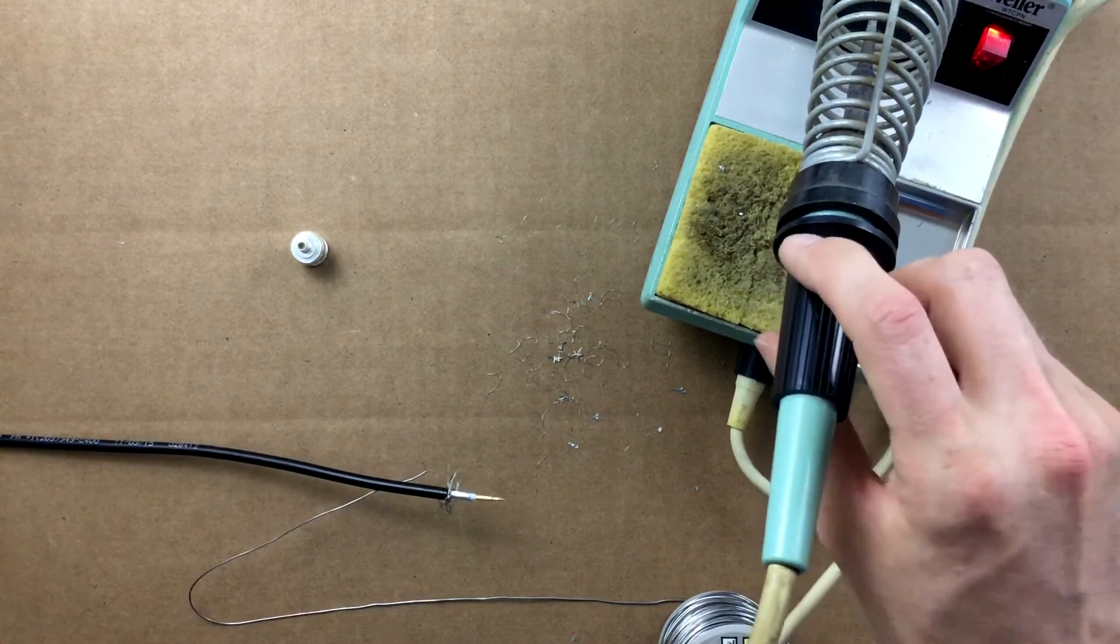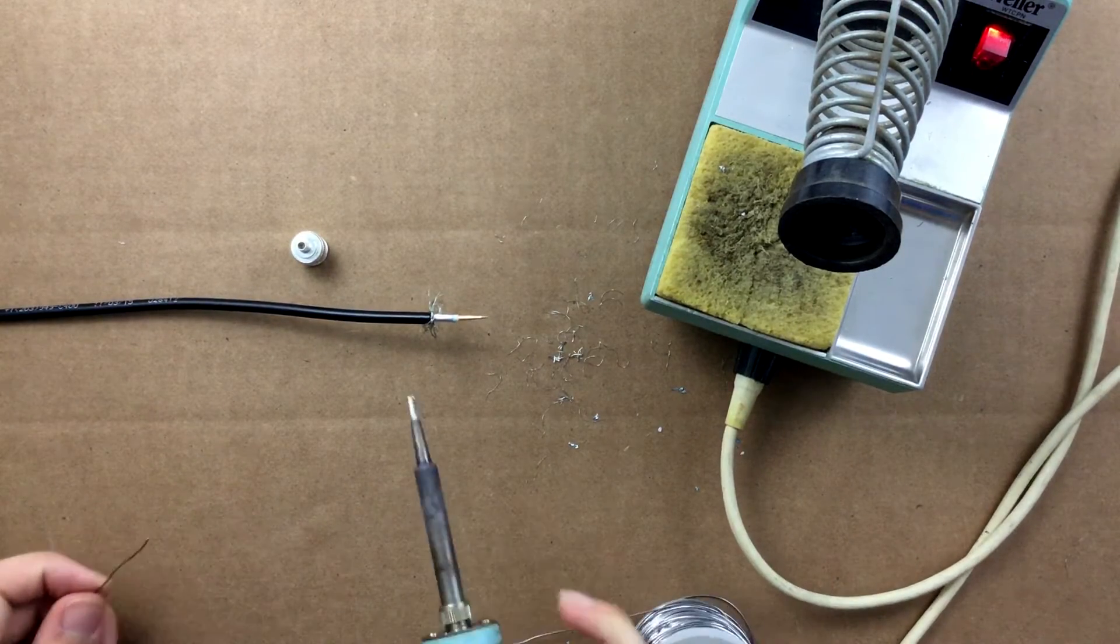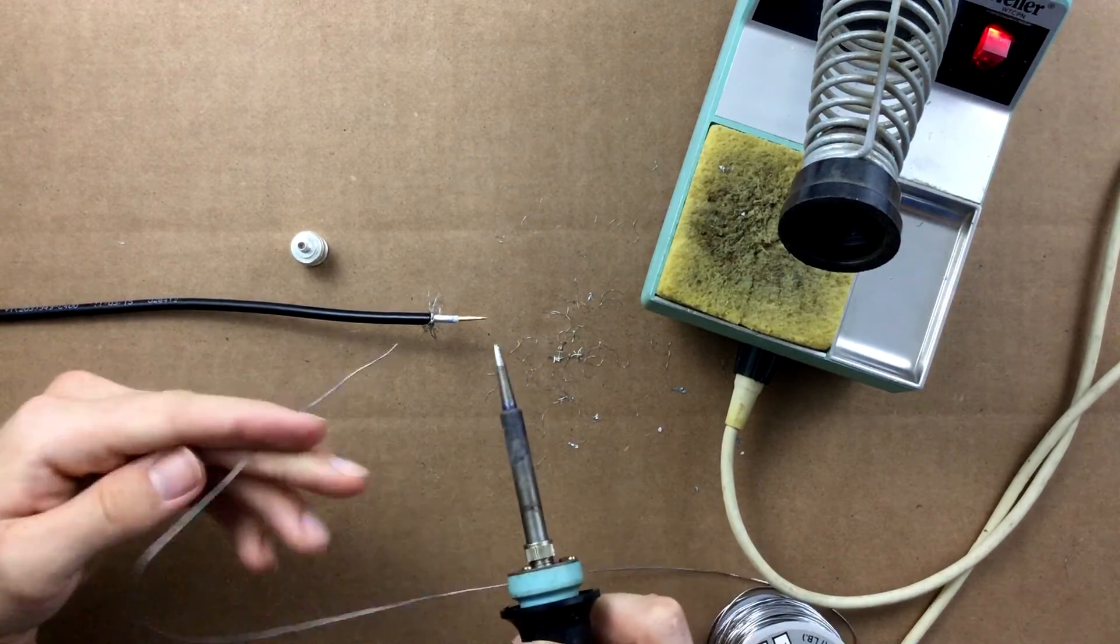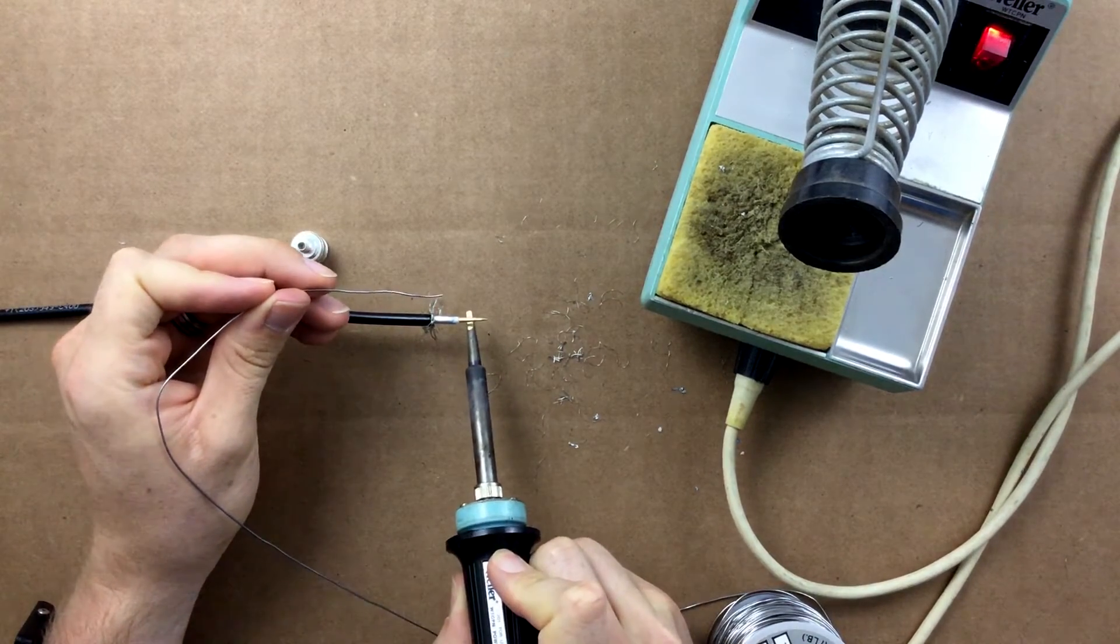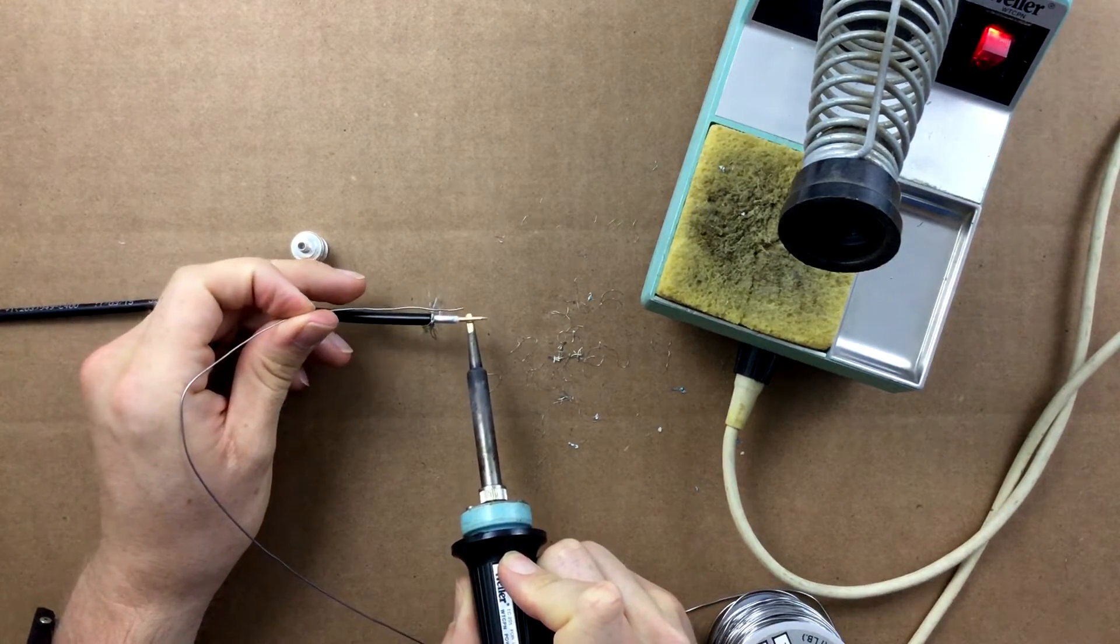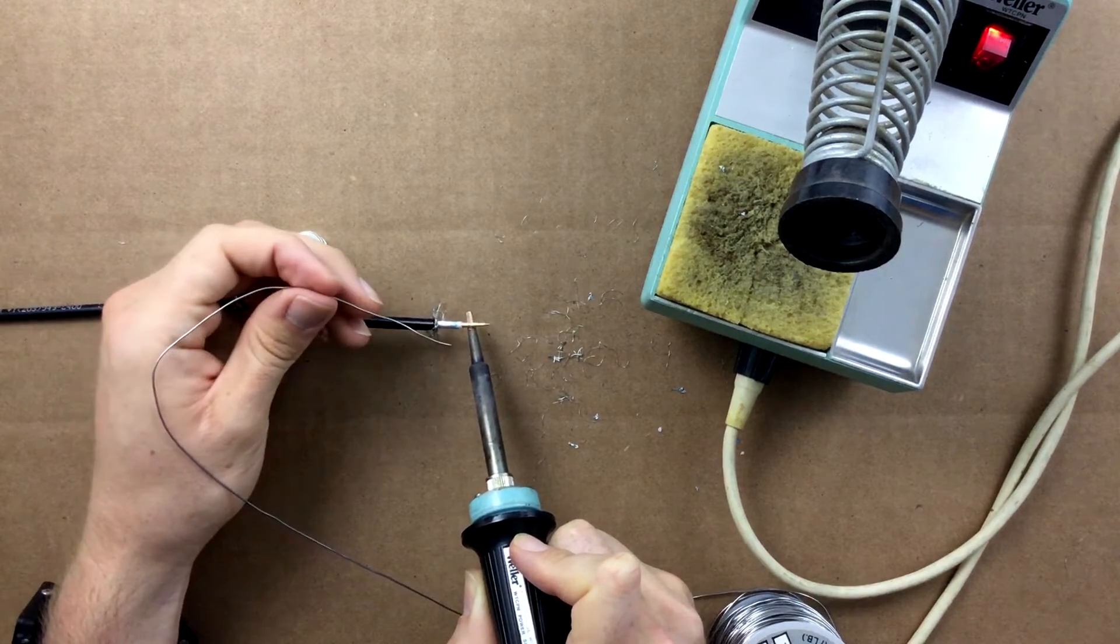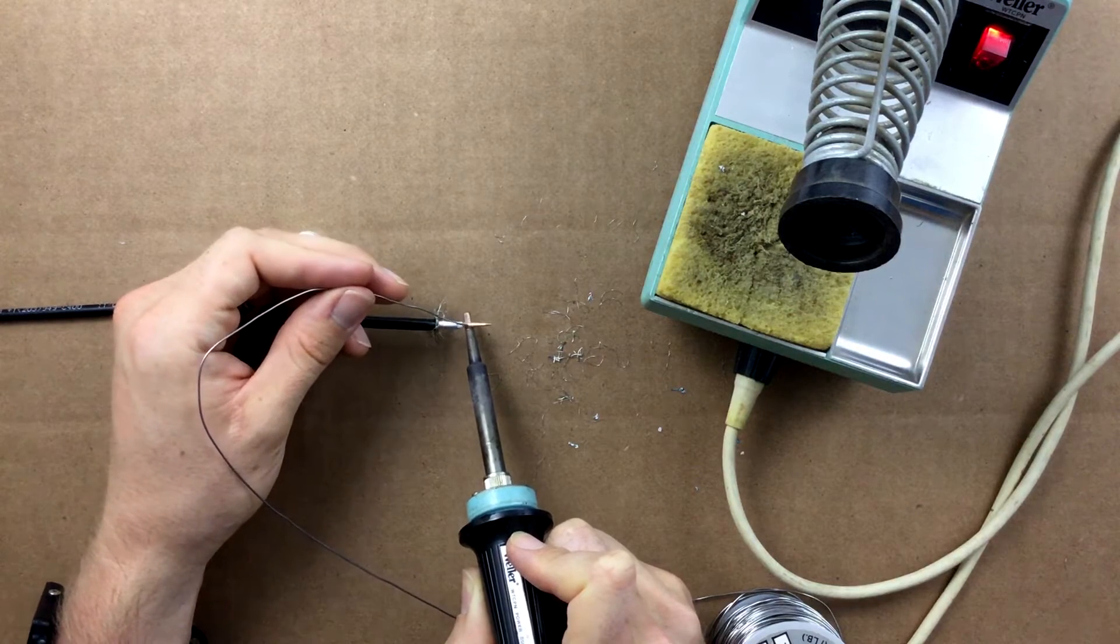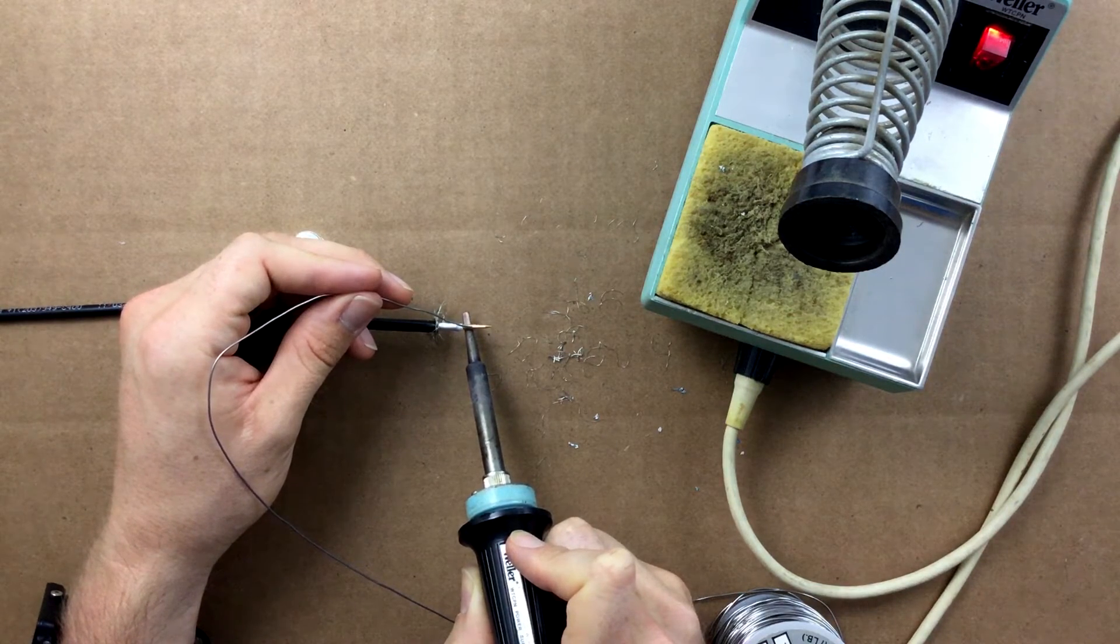When you start soldering, be sure to tin the iron. Place a small amount of solder on the tip of the iron and wipe off both sides. Now place the soldering iron under the center pin and make sure it is making contact. Use a small amount of force upward and toward the coax to keep the center pin on the center conductor. Placing the iron under the pin allows for maximum heat transfer, speeding up the installation process.